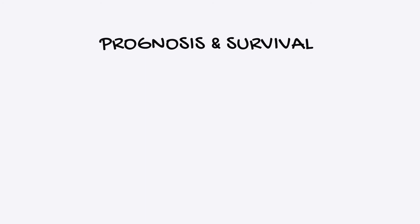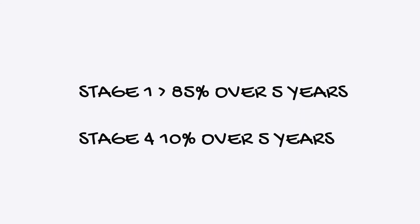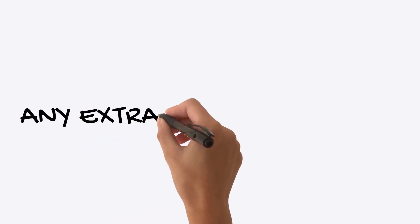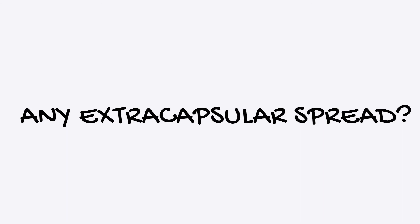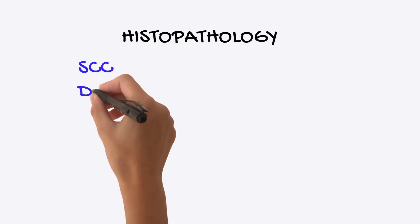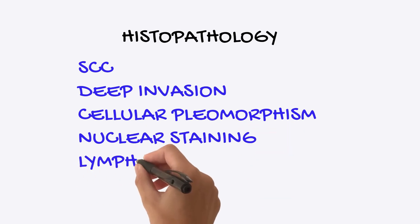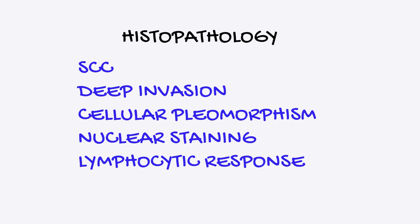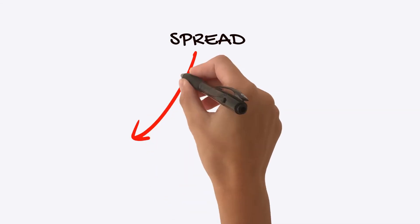Survival for oral cancer depends on the site and staging of the tumour. Prognosis for stage one is more than 85%, while stage four is 10% over five years with considerable comorbidity. The presence or absence of extracapsular spread in metastatic lymph nodes is the most important single prognostic factor. Nodal involvement decreases cure rates by approximately 50%. Histopathologically, most are squamous cell carcinomas showing deep tissue invasion with cellular pleomorphism and lymphocytic response. Spread occurs via local infiltration or the lymphatic system, with late bloodstream spread.